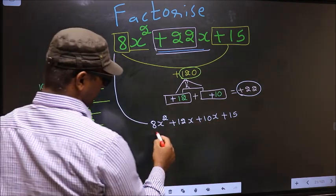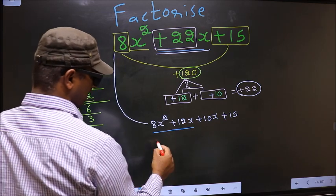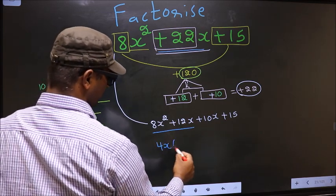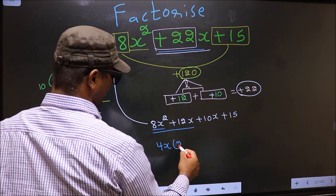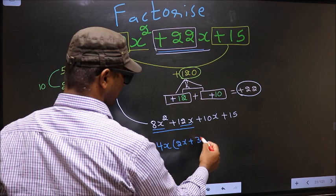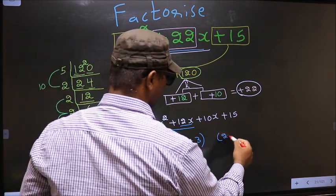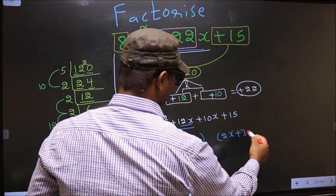Next, now from these 2 terms, what can be taken out common is 4x. So here we get 2x plus 3. Now, whatever we got here, here also we should get the same thing, 2x plus 3.